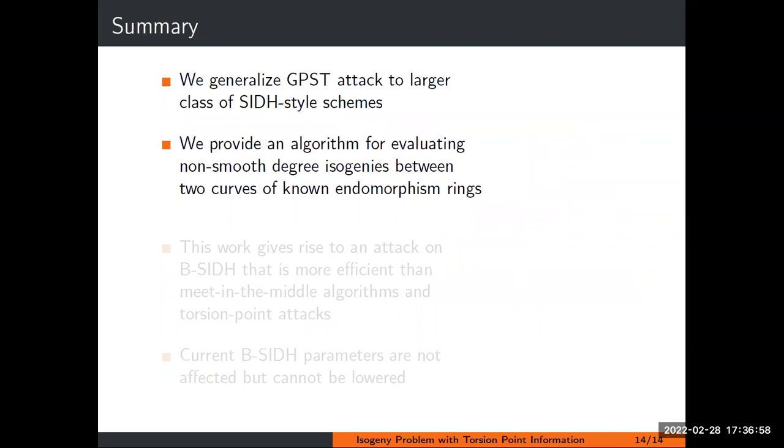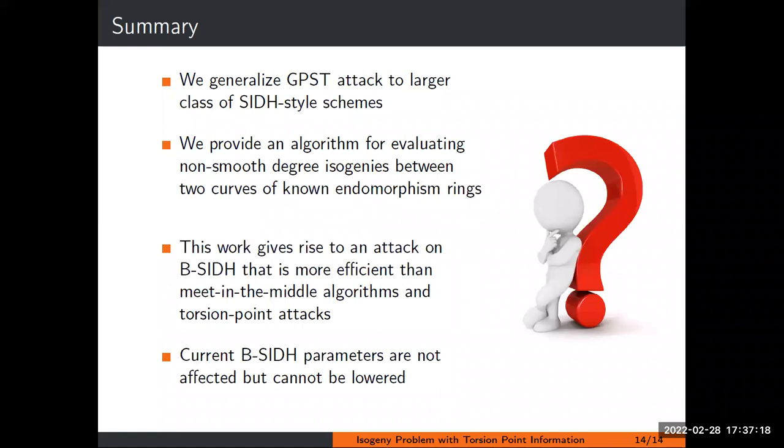To summarize, we generalize the GPS attack to a much larger class of SIDH type schemes, utilizing torsion point information. Furthermore, we provide an algorithm for evaluating non-smooth degree isogenies between two curves of known endomorphism rings, which might be of independent interest. Finally, this work provides an attack on B-SIDH which is more efficient than meet-in-the-middle, not in terms of running time, which is the same, but it is completely memory-free compared to meet-in-the-middle algorithms which need exponential memory. It is also much faster than B-SIDH.